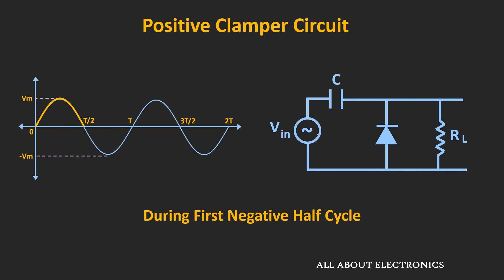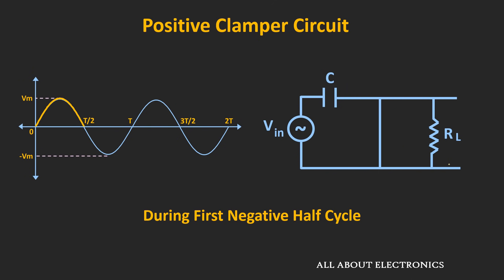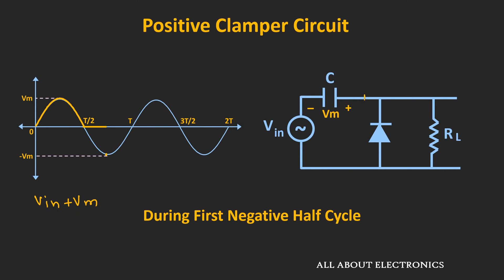Now during the negative half cycle, the polarity of the input voltage will get reversed, so this diode will act as a short circuit, and effectively this resistor R will also get short circuited. During this negative half cycle, this capacitor will get charged through this path and it will get charged to the peak value of Vm. During the negative half cycle, if you see the output, then up to this point it will be equal to zero, and during that time the capacitor will get charged to the peak value of Vm. Now after this point, if you see the voltage across the diode, it will be equal to Vin plus Vm — so this is the voltage which will appear between these two terminals.